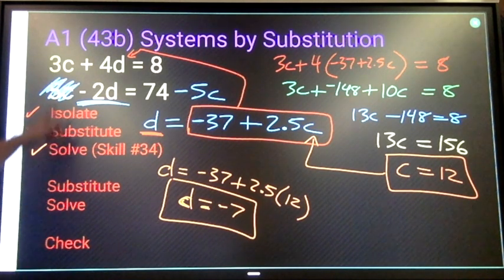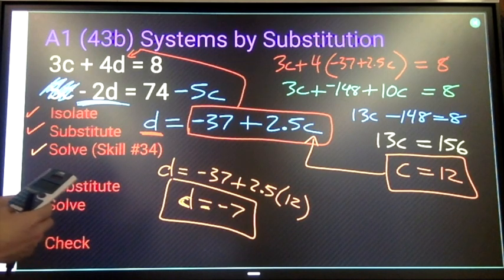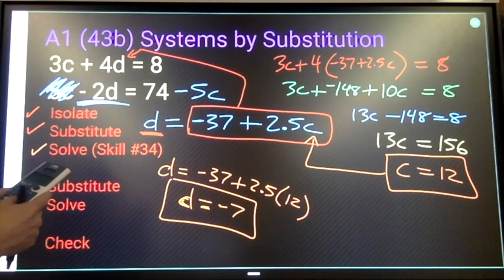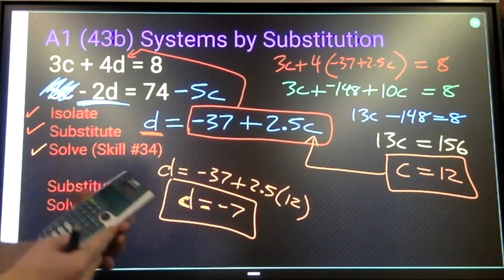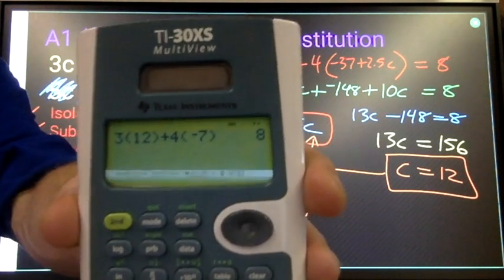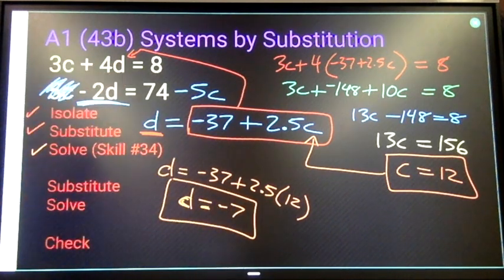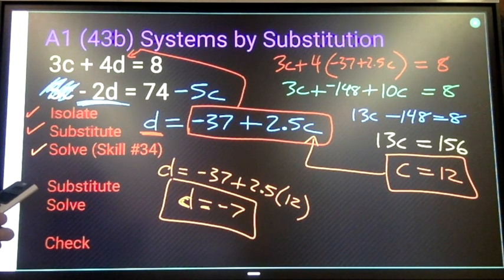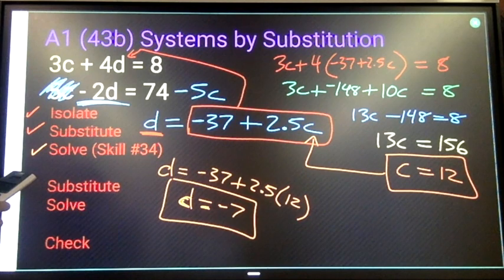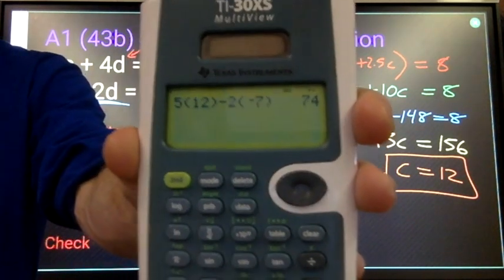Double check. 3 times c, so 3 times 12 plus 4 times d, 4 times negative 7, hopefully will give me 8. That's what I should get. Looking at my other one, 5 times c, 5 times 12, minus 2 times d, 2 times negative 7, hopefully gives me 74.